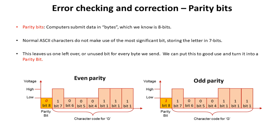Here for example is the ASCII character code for the letter G: 1 0 0 0 0 0 1 1 1, with a leading zero in the most significant bit which isn't used. If we send with even parity, just before we send it we set this most significant bit so that the number of ones in the total message is even. We have one, two, three, four ones, so that's already even, so we set the parity bit to zero. With odd parity we do the reverse — we set the parity bit so the total number of ones is odd, so we add one and then we send it.